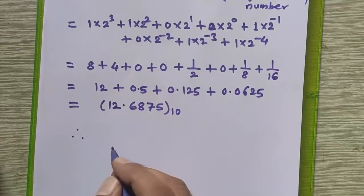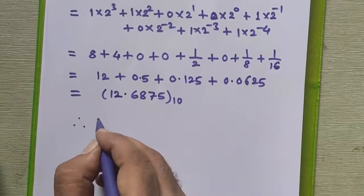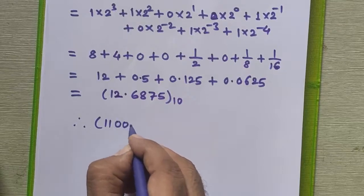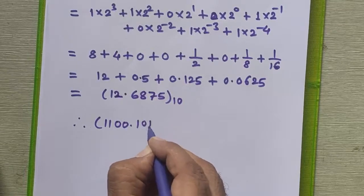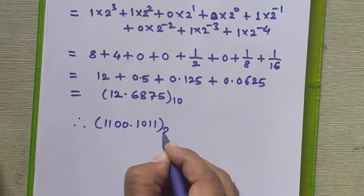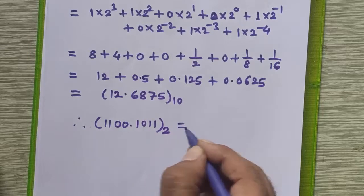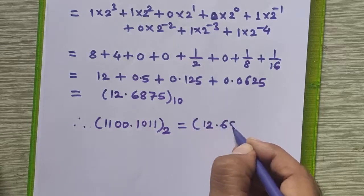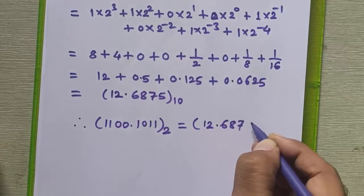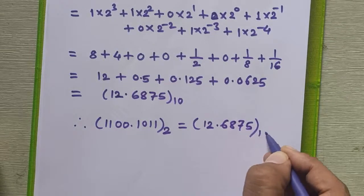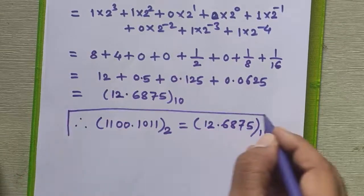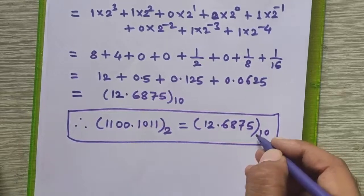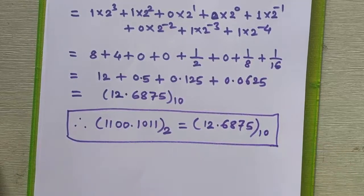Therefore, we can say that 1100.1011 in binary equals 12.6875 in decimal. So this is our result for this problem.